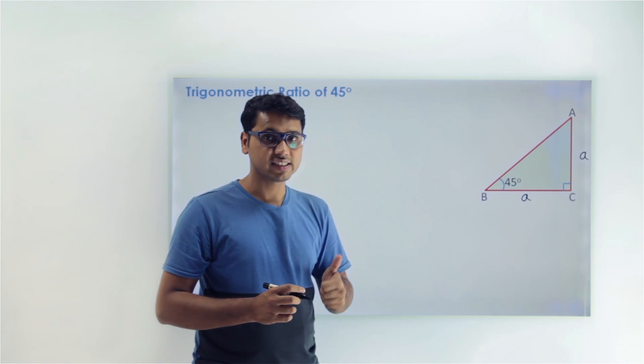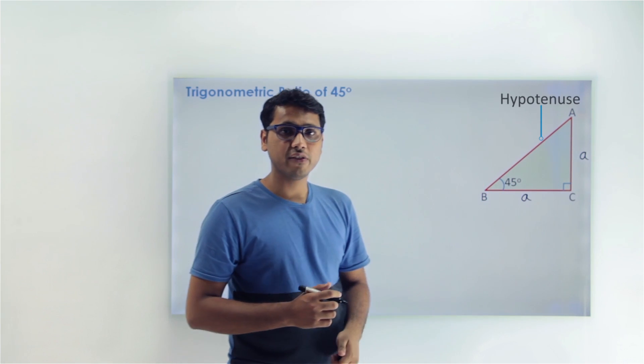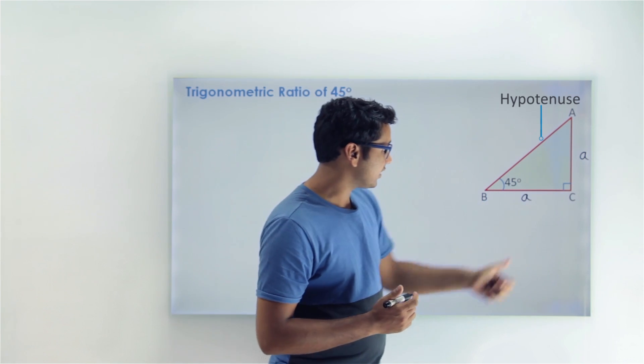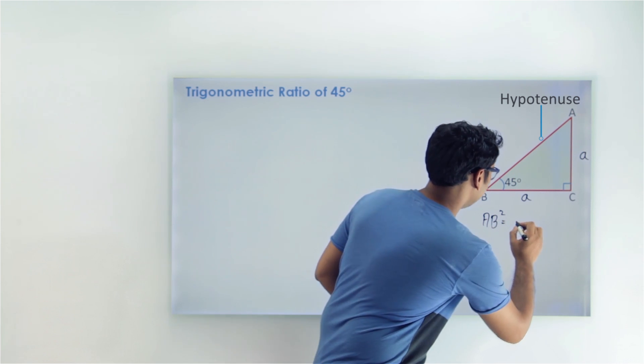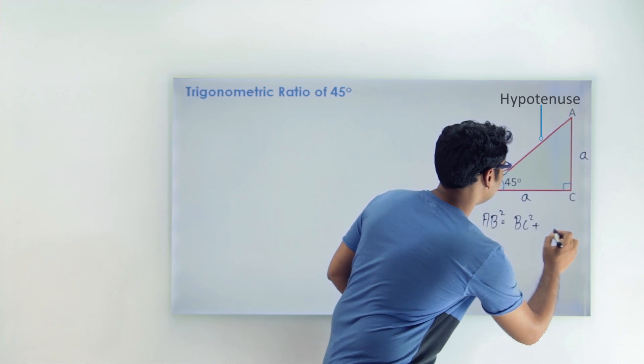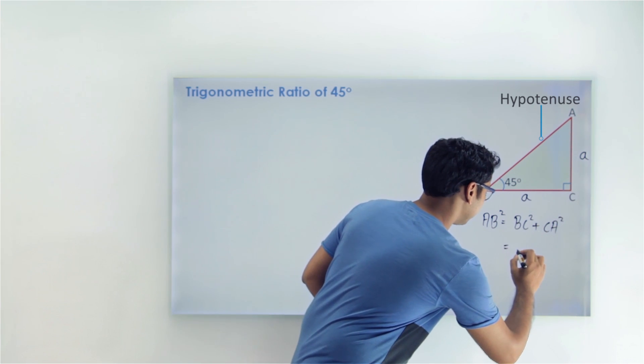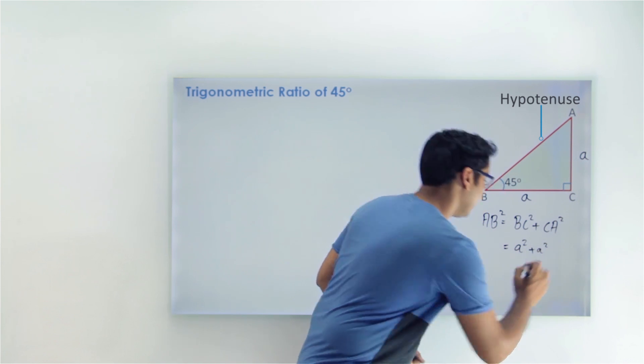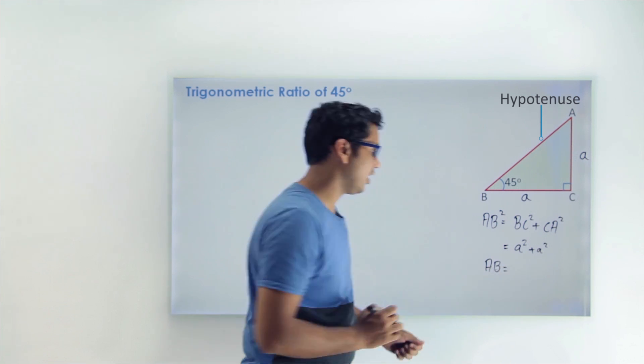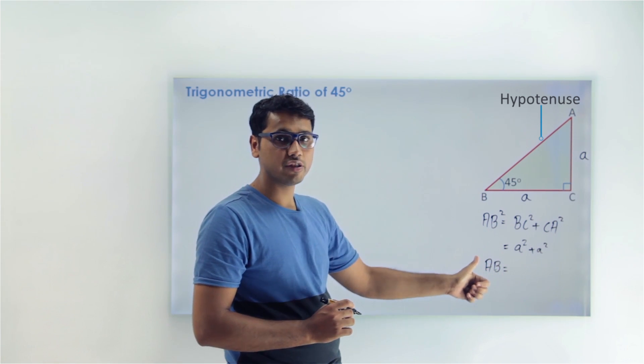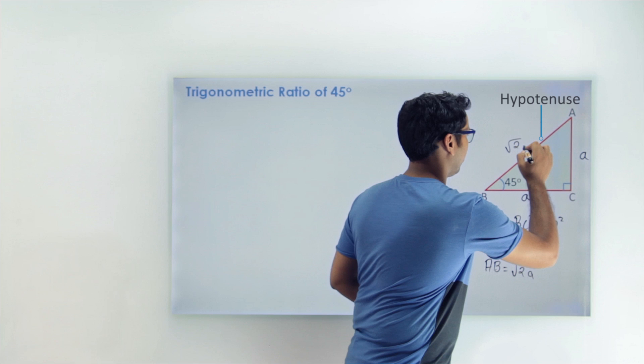Hypotenuse is which side? The side which is opposite to the right angle. So hypotenuse will be AB. And we can find the value of hypotenuse by using Pythagorean theorem. We can get AB squared equals BC squared plus CA squared. And let's find the value. This will be a squared plus a squared. And if we calculate the value for AB, AB squared will come to 2a squared. And if you take the square root, you will get √2a.